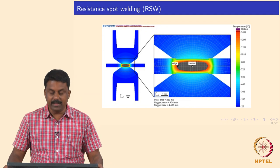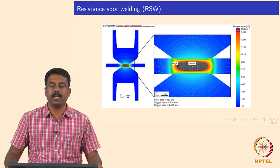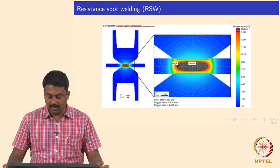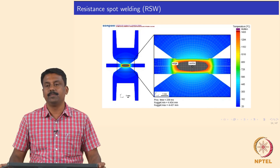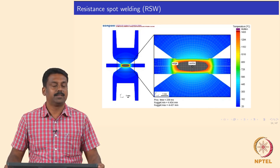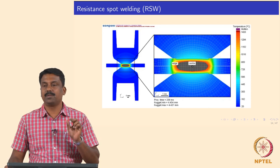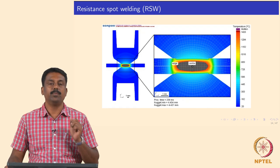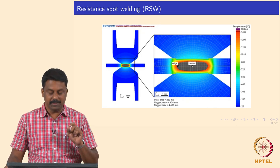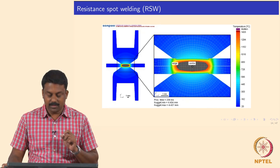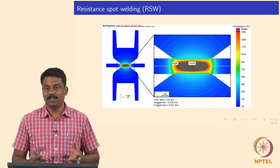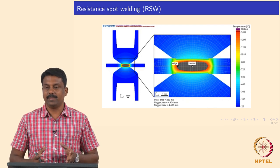If you look at the temperature distribution and temperature gradient in resistance spot welding, the temperature gradient is extremely high. Therefore, the heat affected zone width is very small, because of the effective heat transfer in the process.